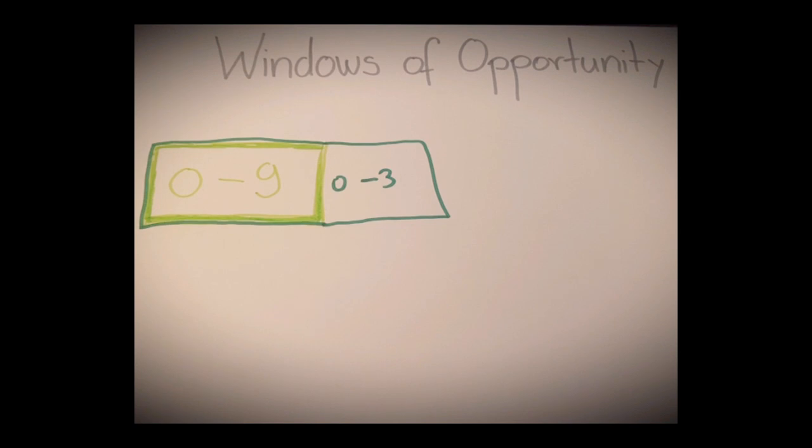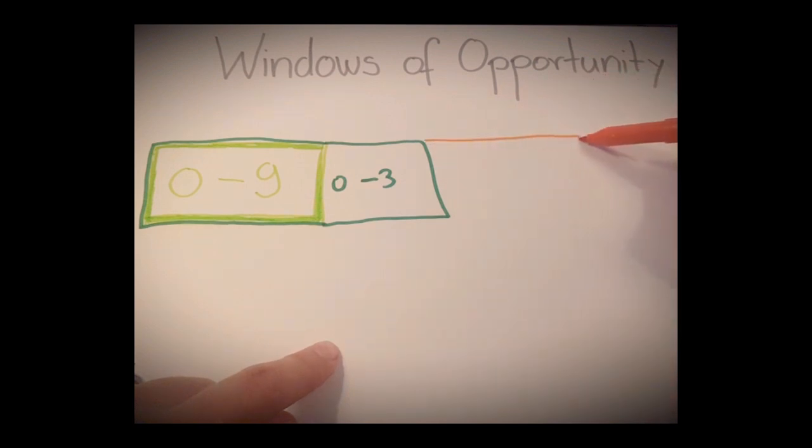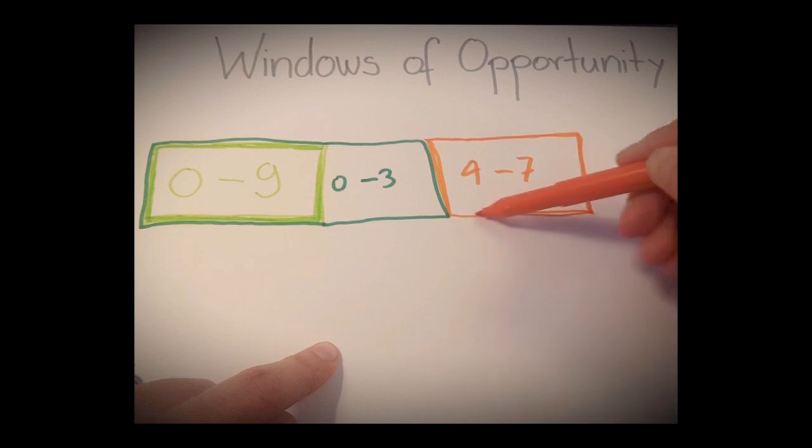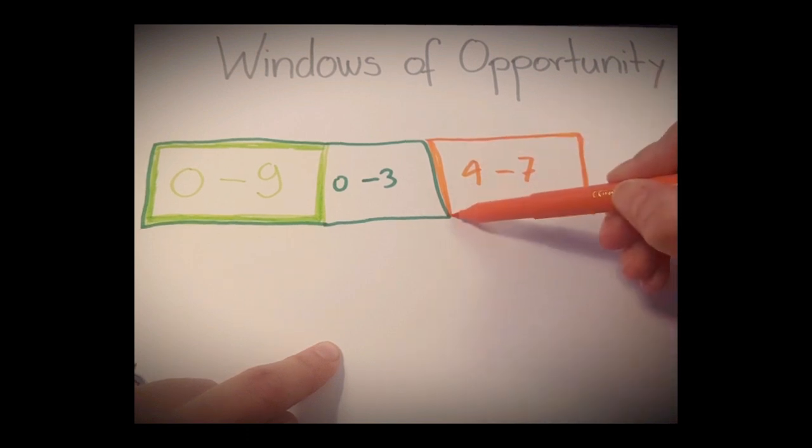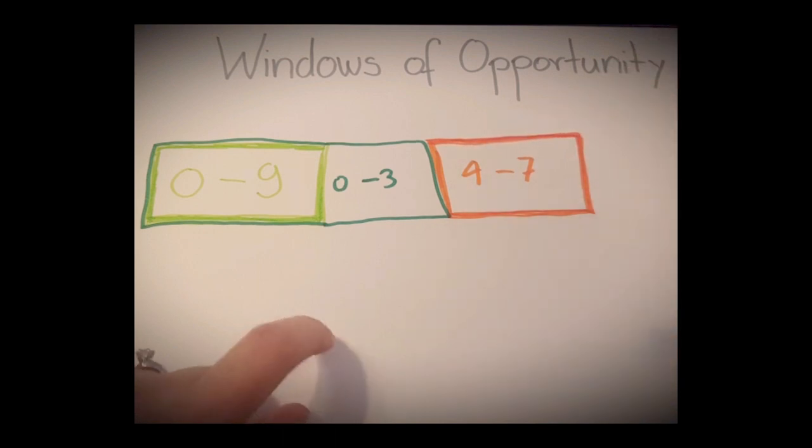The second period goes from four to seven. And during this time kids learn still automatically, implicitly. They don't feel embarrassed when they make mistakes and that's a huge advantage which will not be an advantage anymore once they get older.